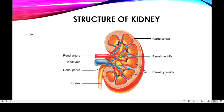These renal pyramids project into a funnel-shaped structure which is known as the pelvis. So the cone-shaped structures are known as renal pyramids, and they open into the pelvis region.